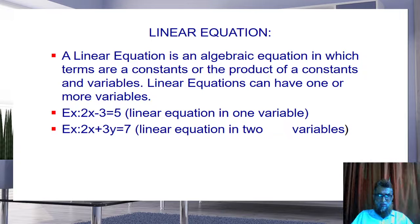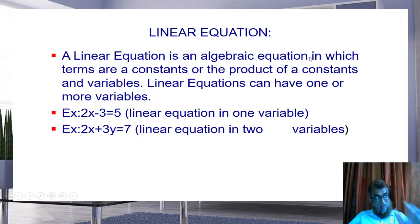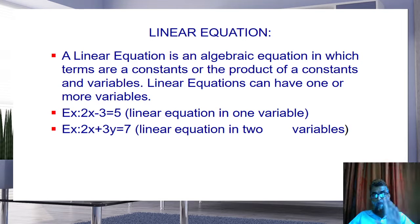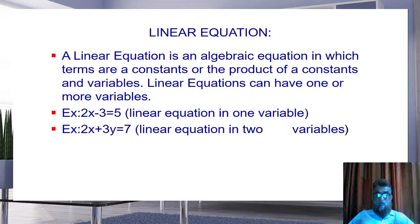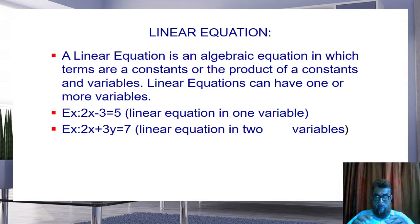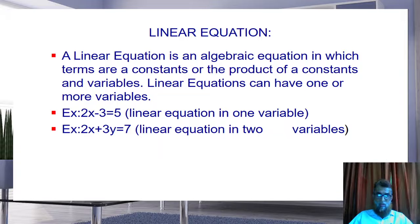Linear equation — what is this linear equation? There are different types of equations, and among them, linear equation is one of the important ones. A linear equation is an algebraic equation in which terms are constants or the product of a constant. Constant means its value does not change. In a linear equation, we have constants and also variables. Constants may be one constant or a product of constants, and there are also variables.